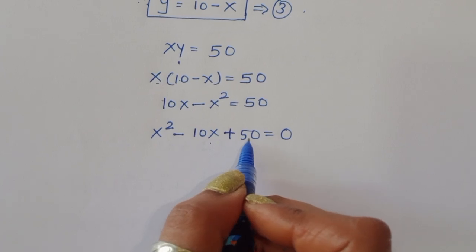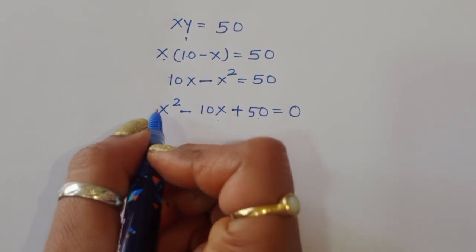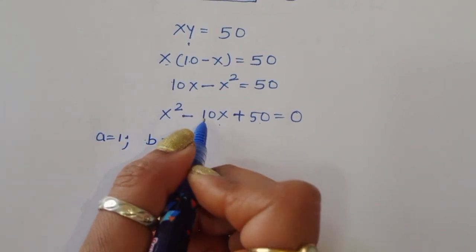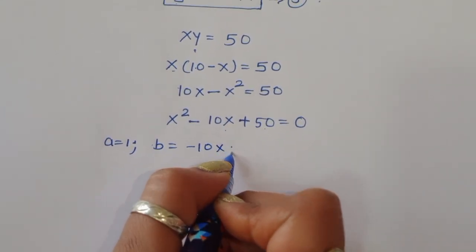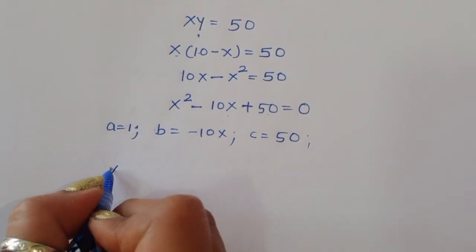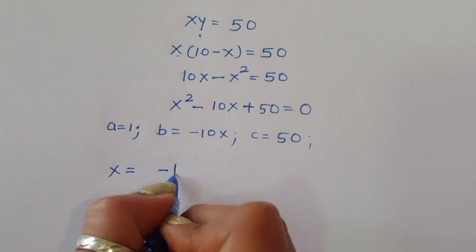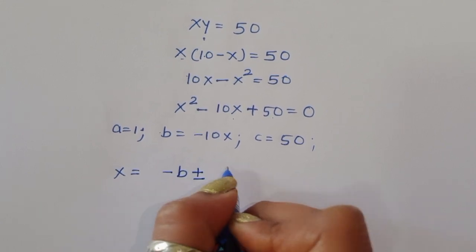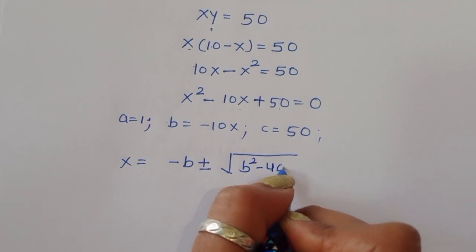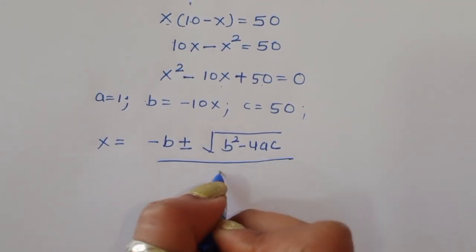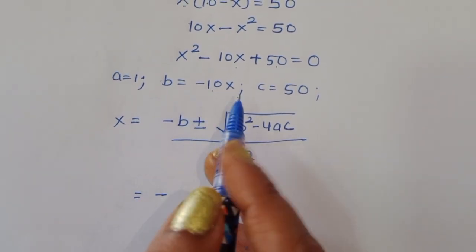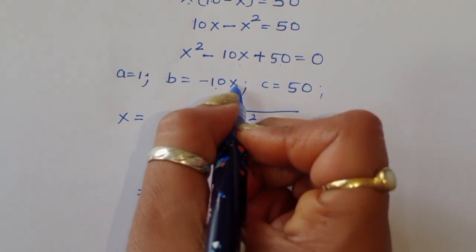So the equation is x squared minus 10x plus 50 equals 0. Our coefficients are: a equals 1, b equals minus 10, and c equals 50. Now let's find the value of x using the quadratic formula: x equals minus b plus or minus square root of (b squared minus 4ac), all divided by 2a.